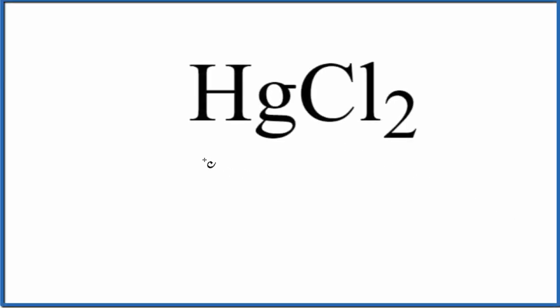Let's write the name for HgCl2. So first off, mercury, that's Hg. That's a metal. Chlorine is a nonmetal. So let's name this as an ionic compound.